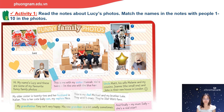Hi, my name's Lucy. And these are some of my favorite funny family photos. This is me with my sister Hannah — we are twins. I'm the one with the blue hair. Uncle Matt, his wife Melanie, and my cousin Joanne — the small one — and John in their new house in London. My older sister is 22 and her husband is Italian. This is her cute baby son, my nephew Nico. This is my dad Michael and my brother Luke — they are crazy Star Wars fans. My grandfather Tony isn't very happy; his new grandson is a bit messy sometimes. And finally my mom Sally — she's a real star.